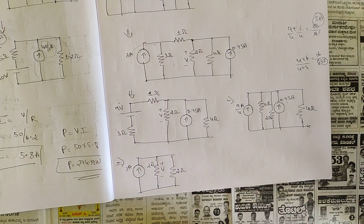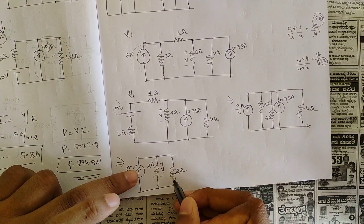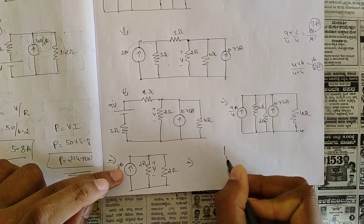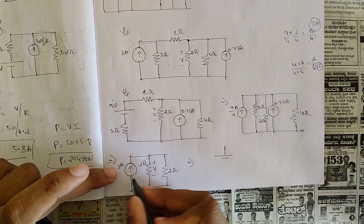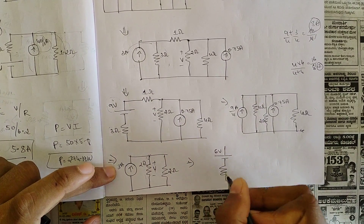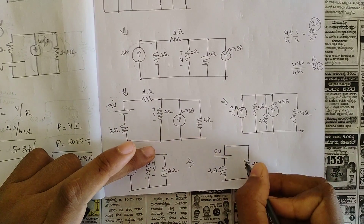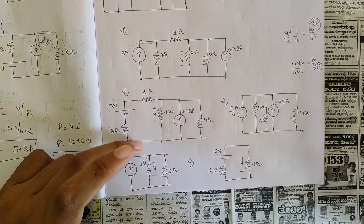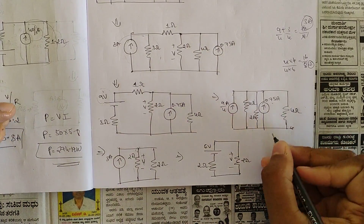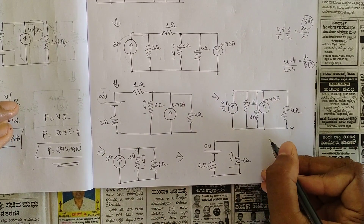This is the final part. The 2 ohm we don't touch. These two current sources in parallel — convert to a voltage source in series with resistance. V = I × R = 3 × 2 = 6 volt, along with this 2 ohm resistance, and the 2 ohm which we have not touched. After source transformation, now the final part is finding the current and then the voltage across this 2 ohm resistance.